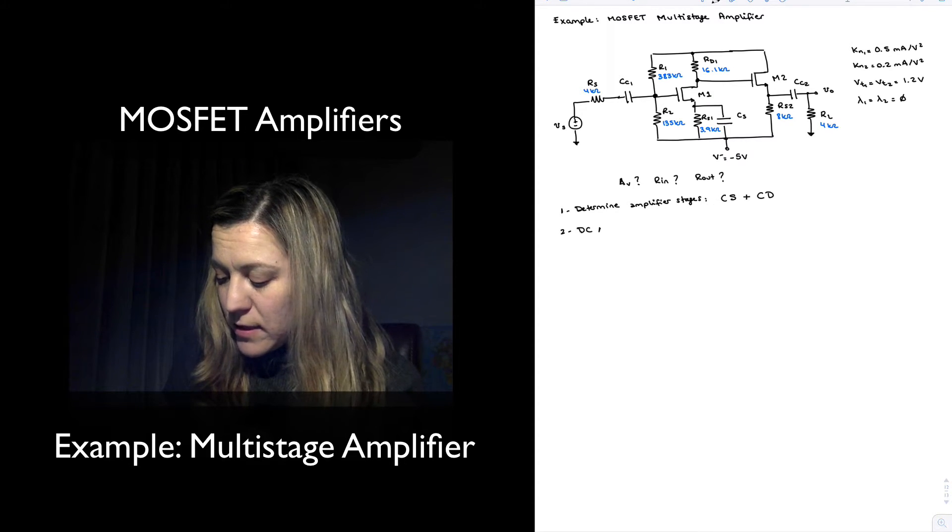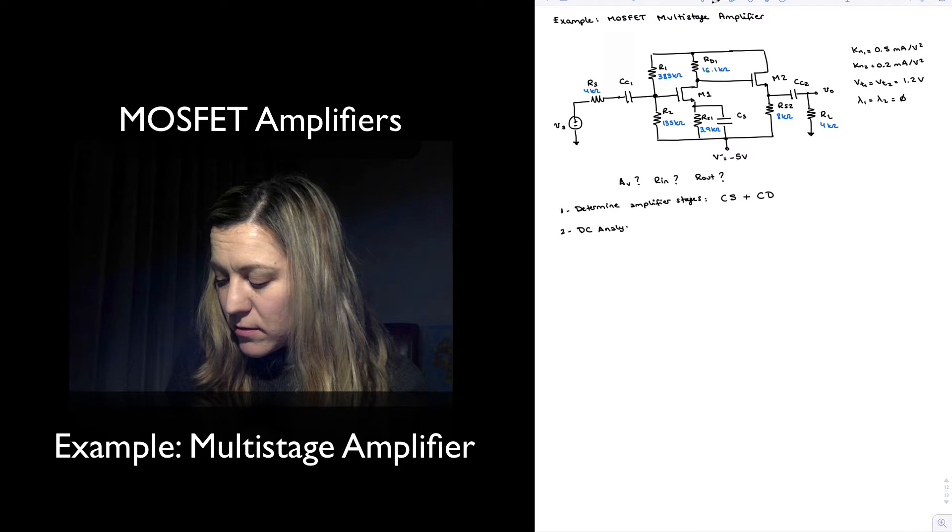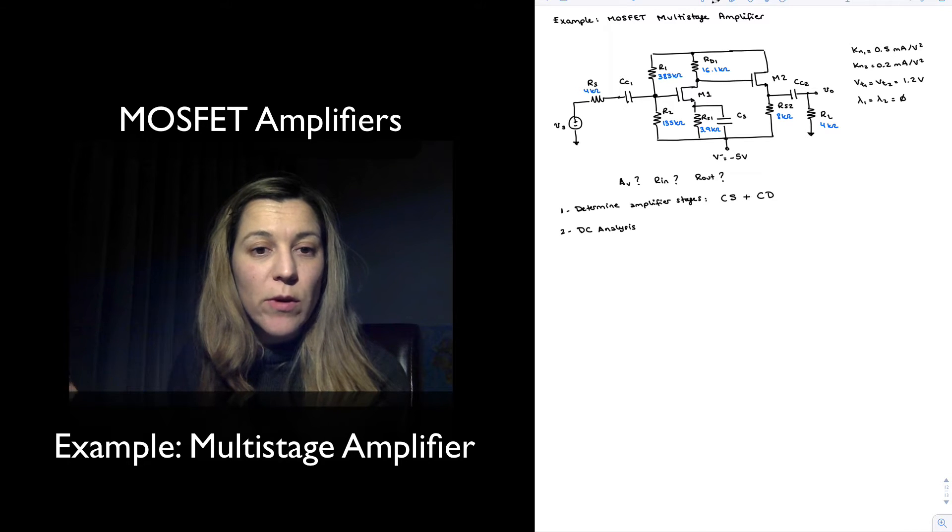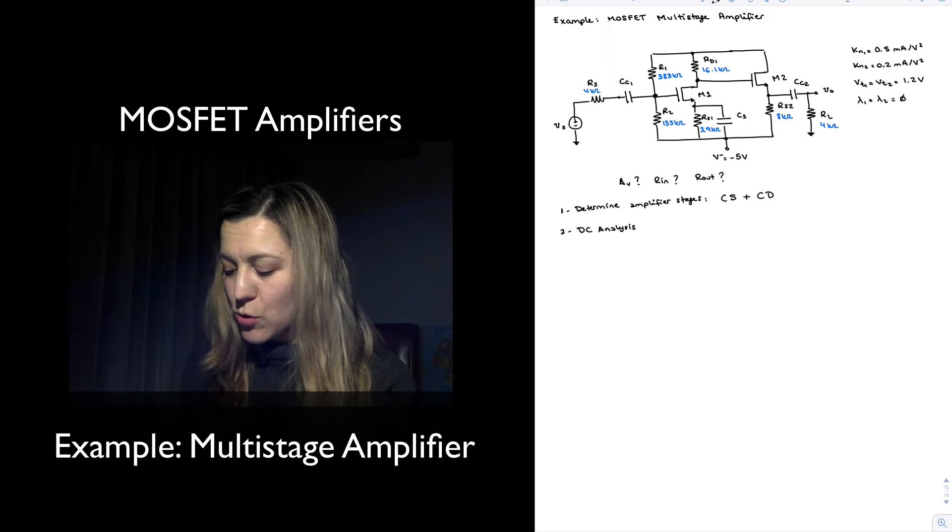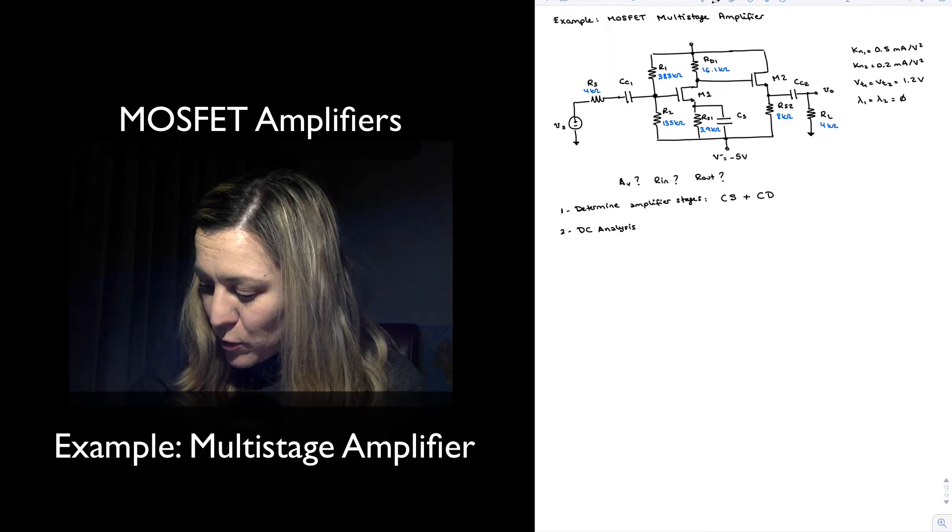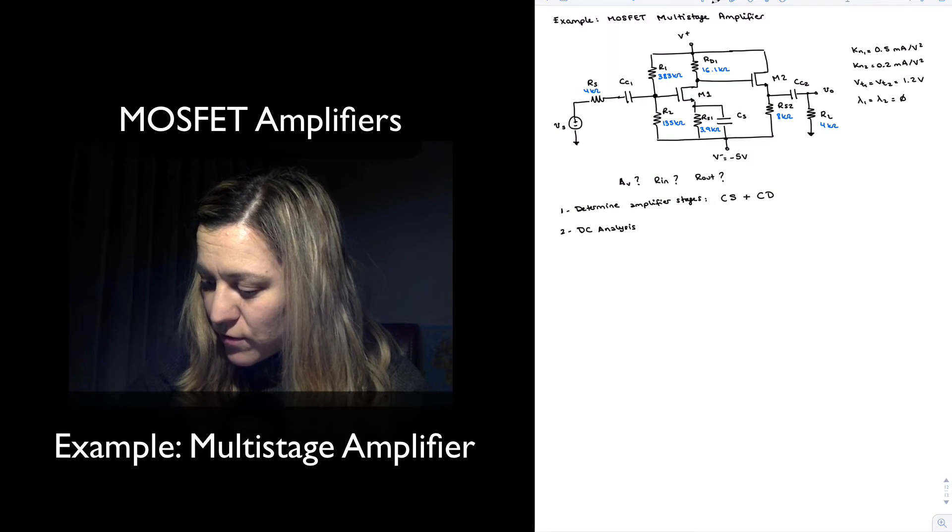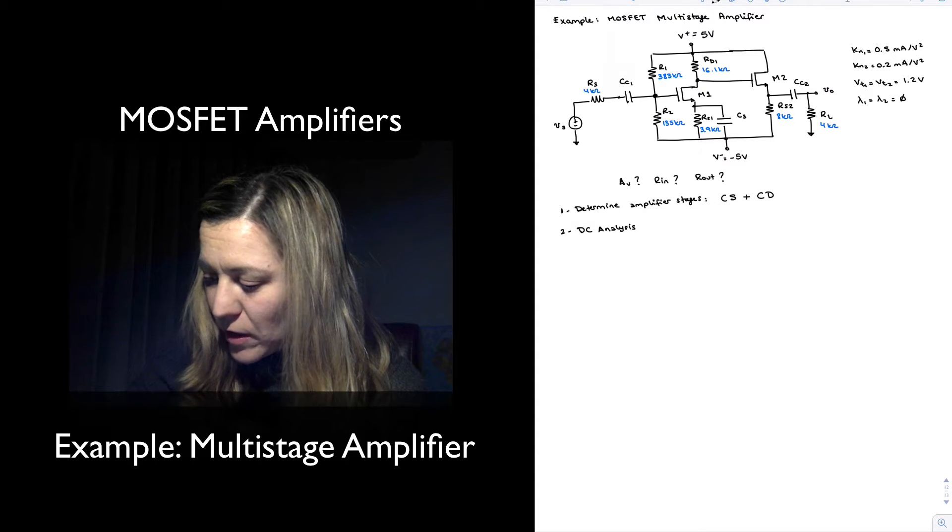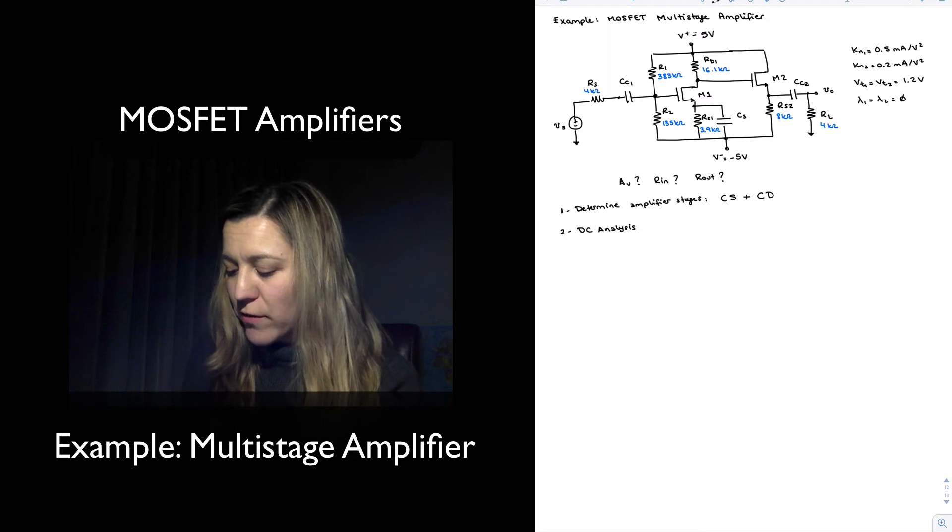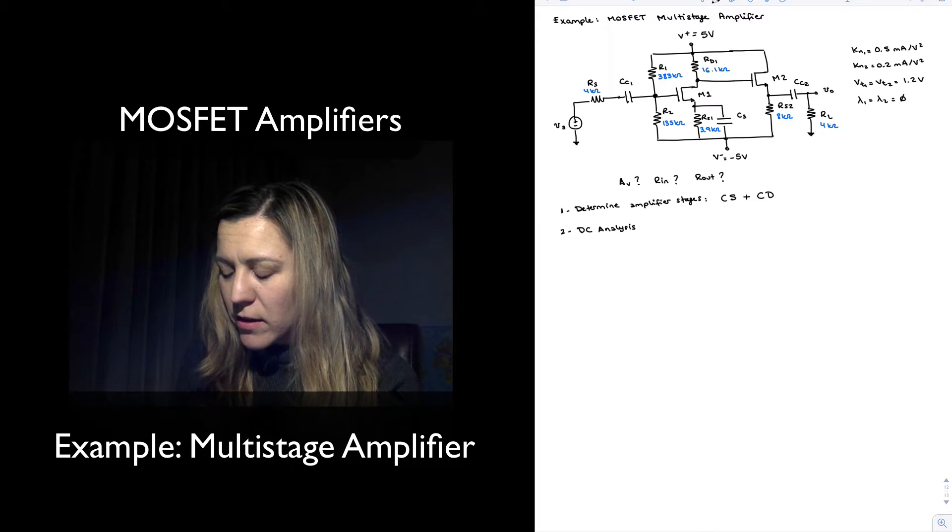Next, I'm going to do my DC analysis with the objective of finding the drain current, the quiescent drain current for both transistors. I'm going to start by connecting my positive supply. We can see that it has dual supplies, V plus and V minus, plus minus 5 volts.